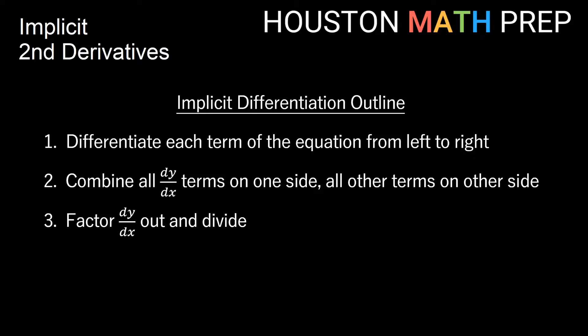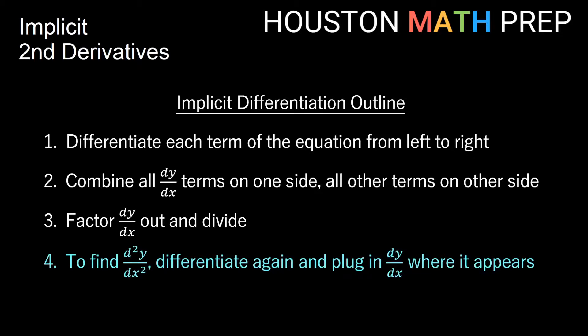When we're finding implicit second derivatives, after we've done all of this and found our dy/dx or our first derivative, we'll need to do an additional step which means we'll need to differentiate again. Anywhere in our formula that we get dy/dx or y prime, we'll have to plug in our answer that we got for the first derivative.